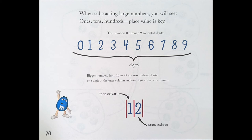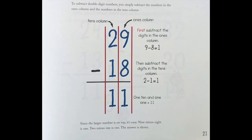Bigger numbers from 10 to 99 use 2 of those digits: 1 digit in the 1's column and 1 digit in the 10's column. To subtract double digit numbers, you simply subtract the numbers in the 1's column and the numbers in the 10's column. Tens column, ones column. First, subtract the digits in the 1's column: 9 - 8 = 1.